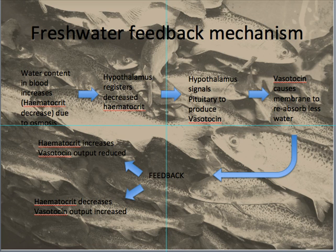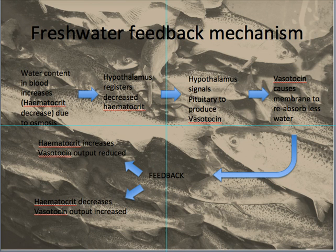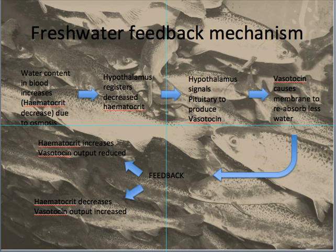So the way that works — going back to this feedback loop again — the hematocrit level is detected. There is a decrease in the hematocrit as a result, so the hypothalamus picks that up. It signals the pituitary to produce the hormone vasotocin. And vasotocin allows the glomerular membrane to stop reabsorbing that water back out of the collecting duct, so it just all gets excreted out. And that way, the kidney prevents being damaged.